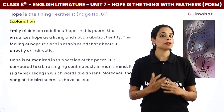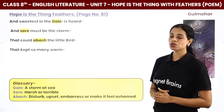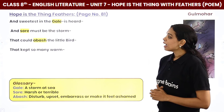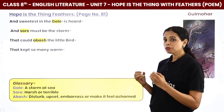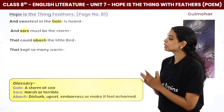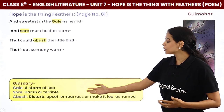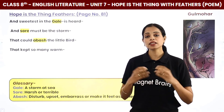Let's move to the next stanza: 'And sweetest in the gale is heard, and sore must be the storm that could abash the little bird that kept so many warm.' Gale is a storm at sea. The poet says that even in a storm, the voice of hope can still be heard. But if the storm is very harsh and terrible, it could abash — disturb or upset — the little bird. When something very negative happens in your life, your inner hope can fade away and you become hopeless, demotivated, and depressed.